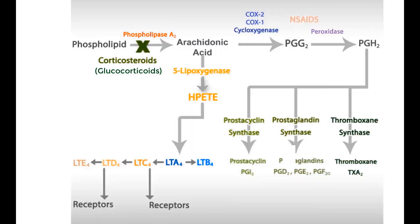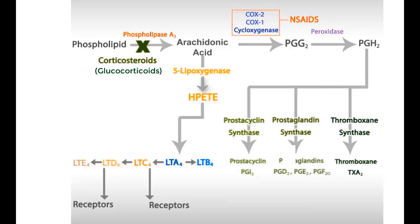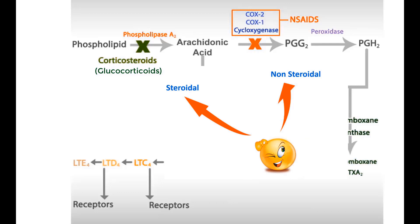The non-steroidal anti-inflammatory drugs, abbreviated as NSAIDs, unselectively inhibit both COX-1 and COX-2 isoenzymes. Remember, glucocorticoids are steroidal anti-inflammatory drugs, whereas COX inhibitors are non-steroidal anti-inflammatory drugs.